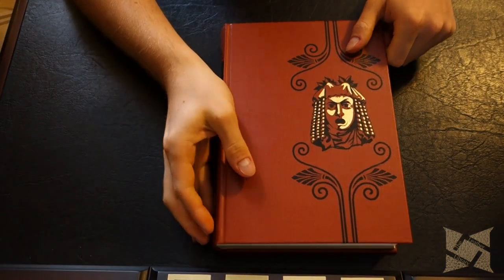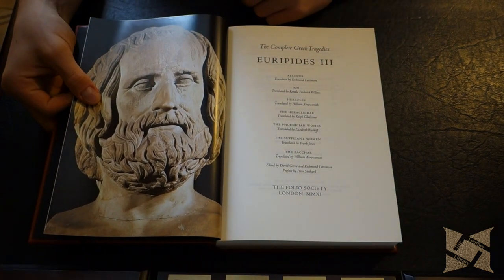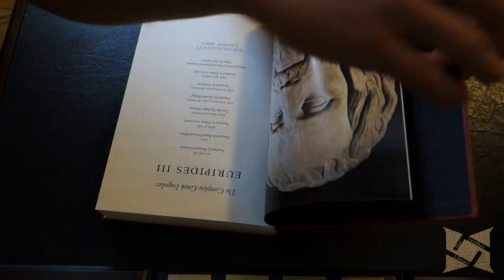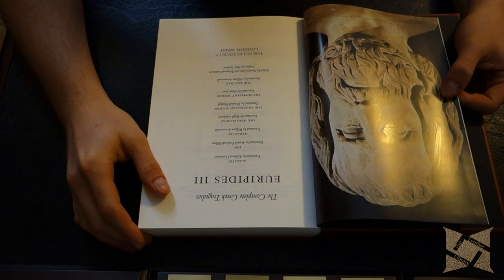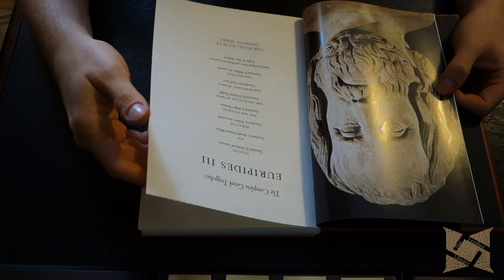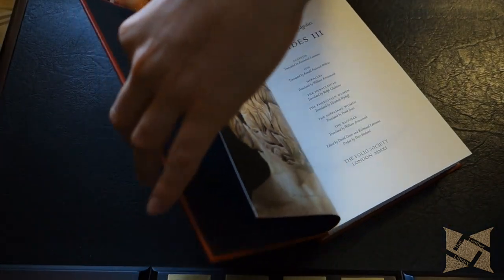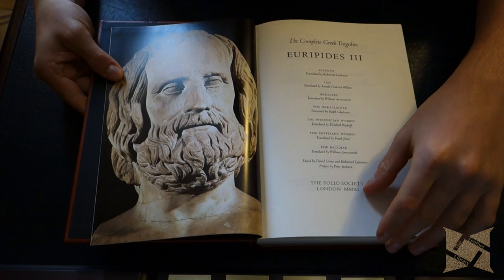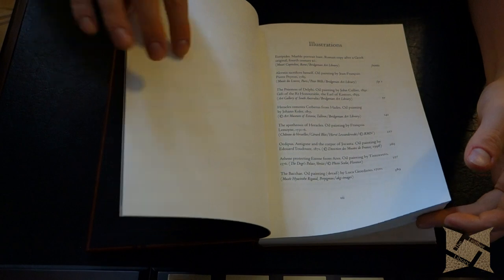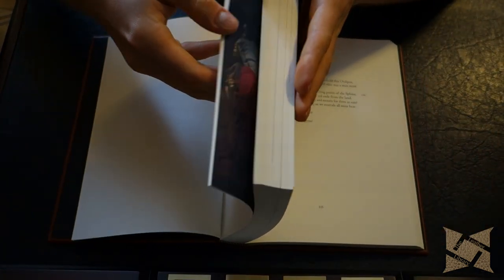The final volume of Euripides and the final volume of the set. Let's see what we got in here. Alcestis, Ion, Heracles, the Heraclidae, the Phoenician Women, Suppliant Women, and Bacchae. Illustration page, and let's go through.